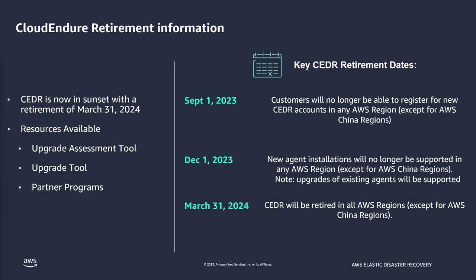What does the retirement information for CloudEndure look like? Currently the retirement timeline for CloudEndure DR is March 31st of 2024. We have some resources available which we'll be going over shortly — an upgrade assessment tool, the upgrade tool itself, and some partner programs. September 1st of 2023, we will no longer be able to register for new CloudEndure DR accounts in any AWS region except for China region. And December 1st 2023, there will be no new agent installations allowed.